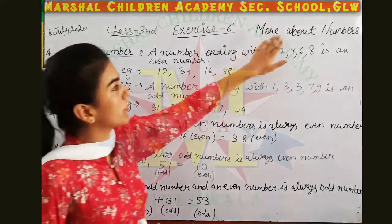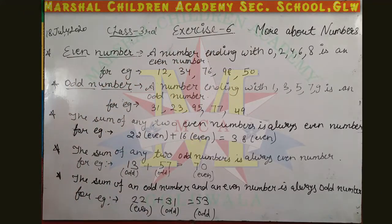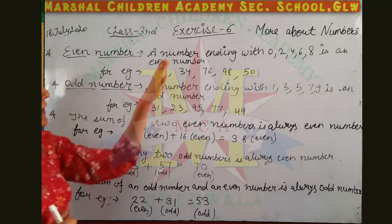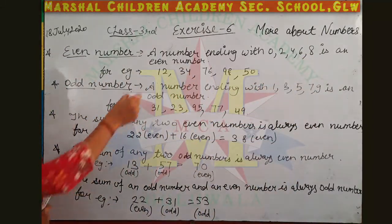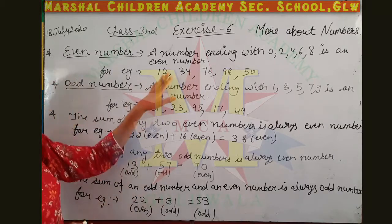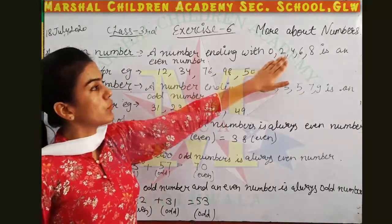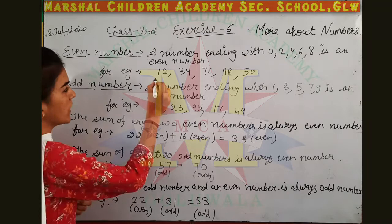Good morning students. Today's topic is more about numbers — that is your second chapter, sixth exercise. Before going to the exercise, I want to discuss what is an even number. A number ending with zero, two, four, six, or eight is an even number. For example, here we have 12.